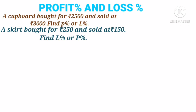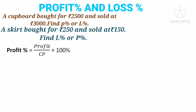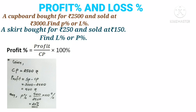What is the formula to find profit percentage? Children, can you give me? We have learned in the earlier classes. Profit percentage equals profit divided by cost price into 100 percentage. Here profit equals SP minus CP: 3,000 minus 2,500 equals 500. Then profit percentage equals 500 divided by 2,500 into 100 percentage. The answer becomes 20 percentage.